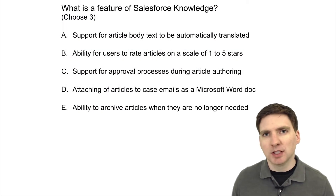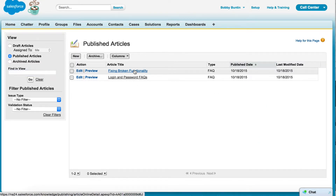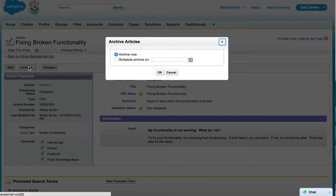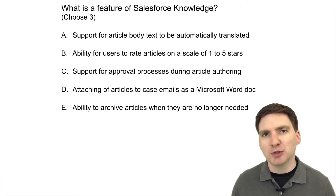Answer E: Archiving of articles when they are no longer needed is a feature of Salesforce Knowledge. A knowledge manager can go into articles manually and archive them when they are no longer needed. You can also set up an archived date in the future when you want an article to automatically be archived. Archived articles can still be searched by your knowledge managers and used to create new articles to be republished.